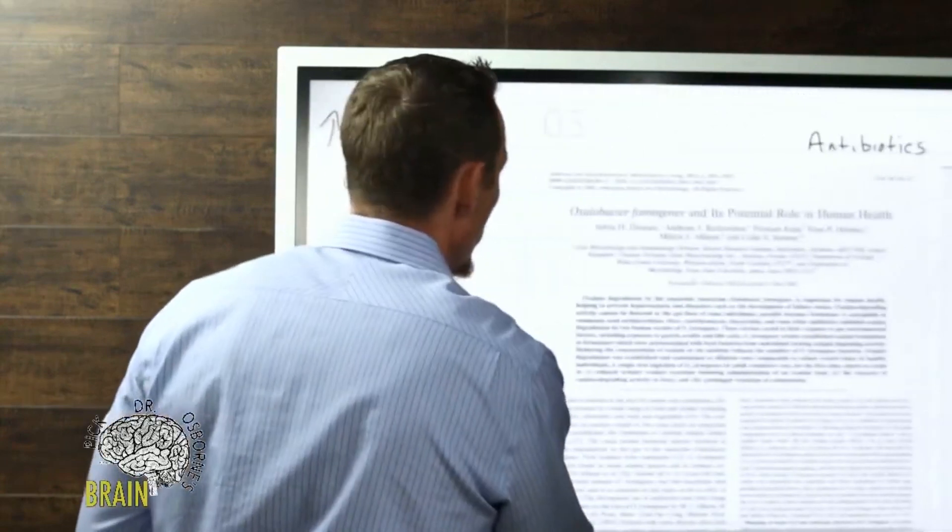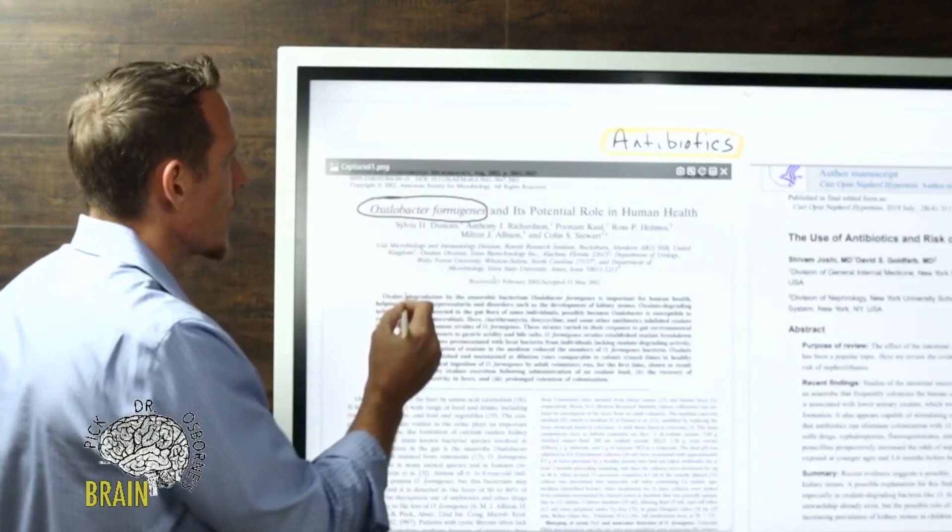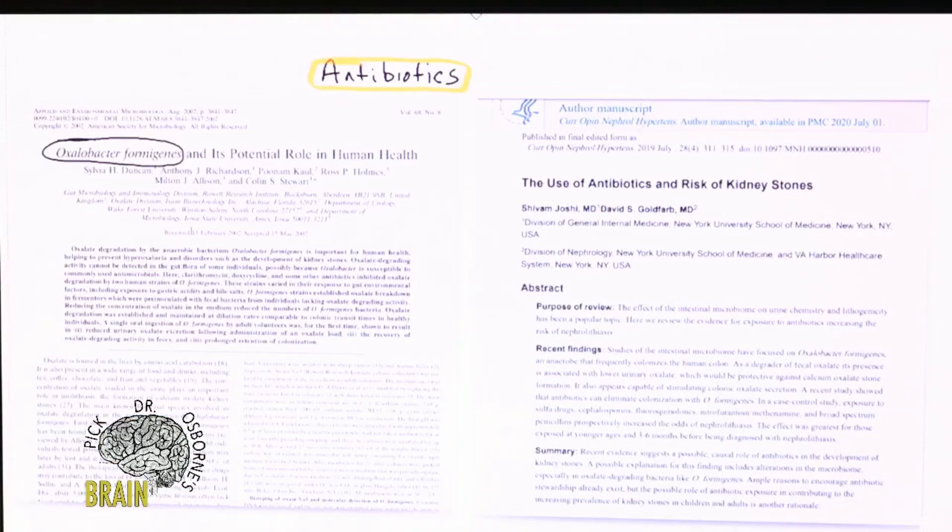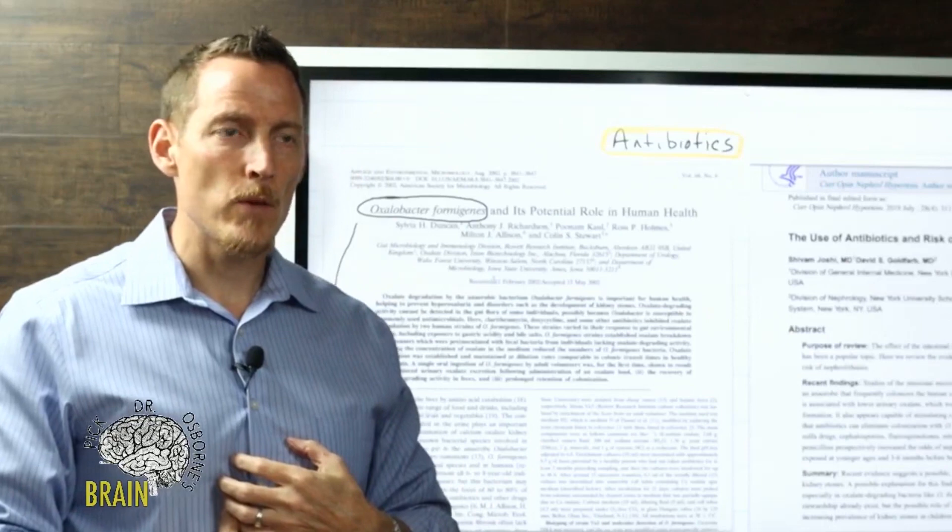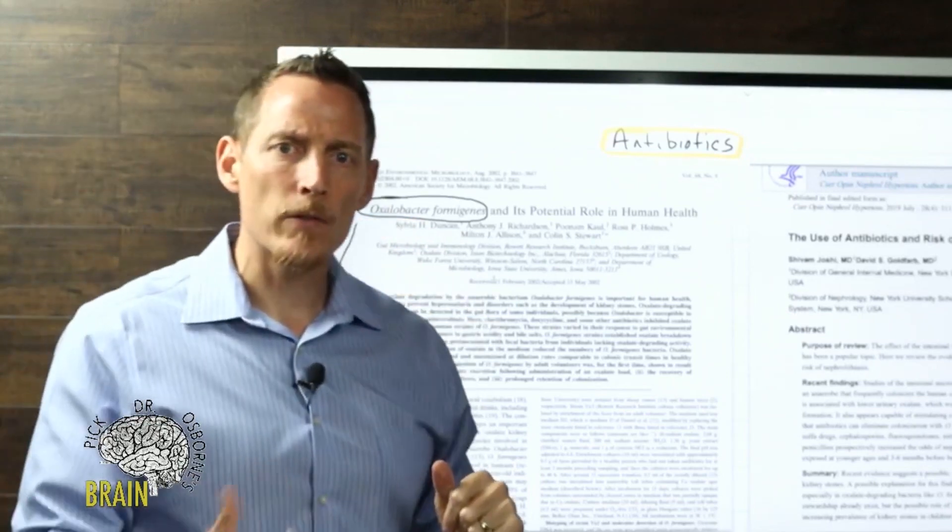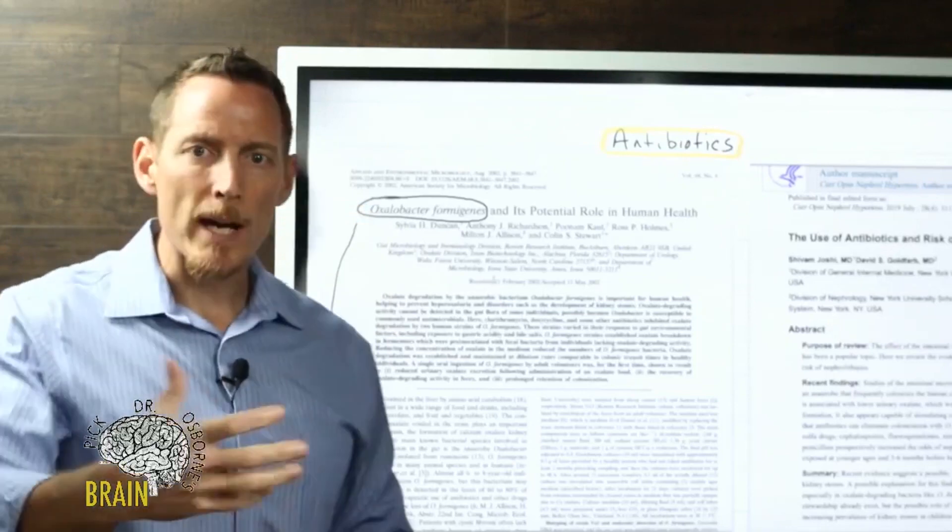One of the other things that can increase your risk of oxalate toxicity is antibiotics. Why can antibiotics increase the risk of oxalate toxicity? Two big reasons. You can see these research studies. In this particular study, you see there's a type of bacteria called Oxalobacter formigenes and its potential role in human health. This particular bacteria is known to help break oxalates down when you eat. This bacteria lives in your GI tract. If you have healthy populations of oxalobacter - this has actually been studied - people with healthy populations of oxalobacter are not as impacted or affected by dietary oxalates, meaning their healthy guts with robust bacteria can break oxalates down and get them out easier.